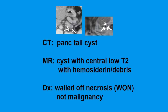It seems like everybody over the age of 60 has a pancreas tail pseudocyst referred for follow-up MRI. One pearl: if we get a cyst on MR and there's central decreased T2 signal — fairly dark or almost a signal void — that is fairly typical for walled-off necrosis and is very unlikely to be malignant.